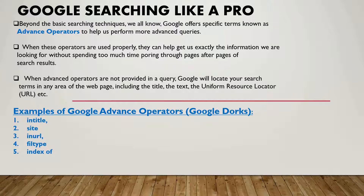When these operators are used properly, they can help us get exactly the information we are looking for without spending too much time going through pages after pages of search results. When advanced operators are not provided in a query, Google will locate search terms in any area of the web including the title, text, and URL.